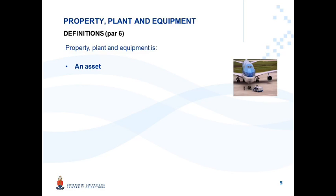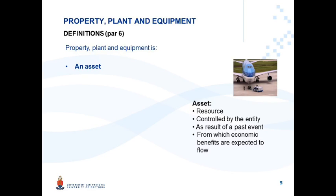We have a definition. The definition of property, plant and equipment from paragraph 6 of IAS 16 is as follows: it is first of all an asset. As seen in the conceptual framework, an asset is a resource controlled by the entity as a result of a past event from which economic benefits are expected to flow. This has been dealt with in the lectures on the conceptual framework.